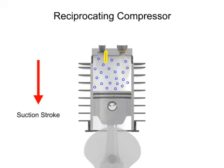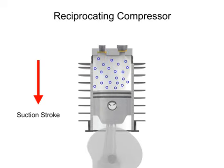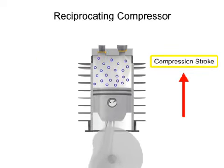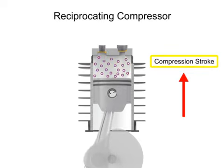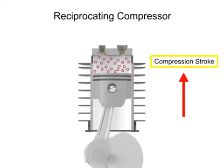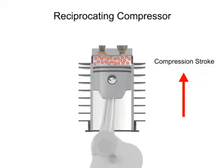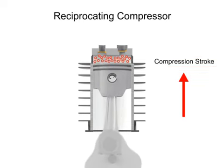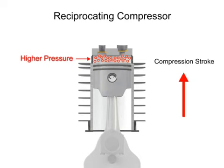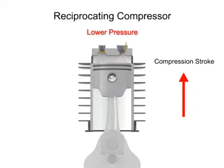As the piston begins its upward compression stroke, the volume within the cylinder decreases. The decrease in volume causes the pressure within the cylinder to increase. The increase in pressure opens the outlet valve and compressed air discharges from the cylinder.